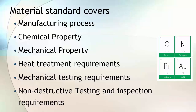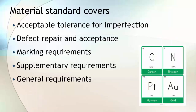Material standard covers the manufacturing process of raw material and the finished product. It also gives the requirements for chemical and mechanical properties required in the finished product, and suggests various heat treatments to be performed during manufacturing. Material standard also gives requirements for mechanical testing, non-destructive testing, and various inspection methods to be performed during product inspection. It also gives various acceptable tolerances for imperfections. When an imperfection is beyond the acceptable limit, it is known as a defect.